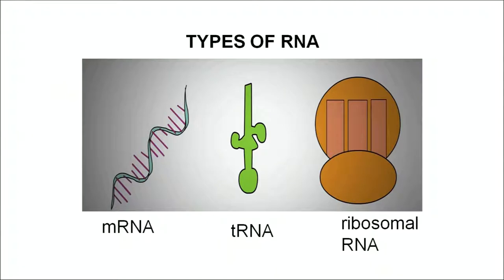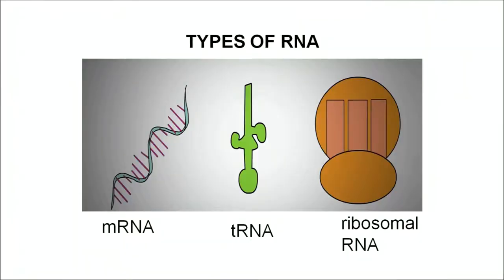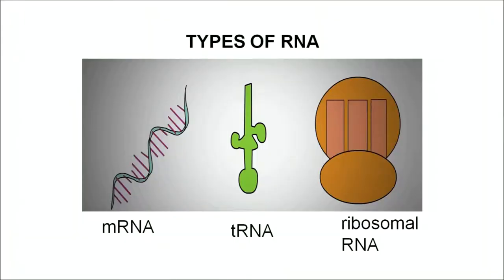Translation is performed by the RNAs. Messenger RNA is formed using DNA as the template. Transfer RNA and ribosomal RNA are present in the cytoplasm. The transfer RNA has a cloverleaf-like structure - the green colored one as visible in the slide. At the bottom, anticodons are present which are complementary to the codons on messenger RNA, and at the top end the amino acid is attached. For every amino acid there is a different transfer RNA. Ribosomal RNA is made up of many proteins and RNA together.